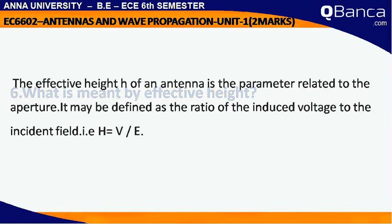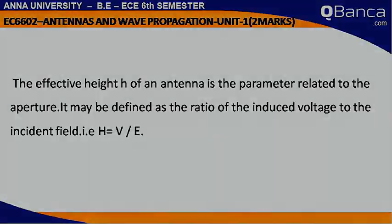What is meant by Effective Height? The effective height H of an antenna is the parameter related to the aperture. It may be defined as the ratio of the induced voltage to the incident field, i.e., H equals V divided by E.